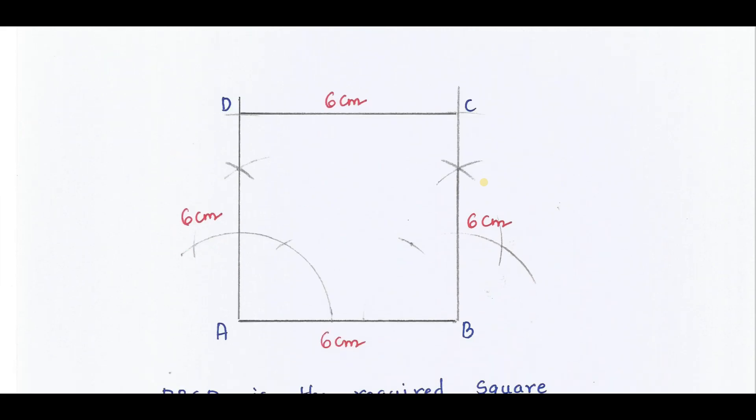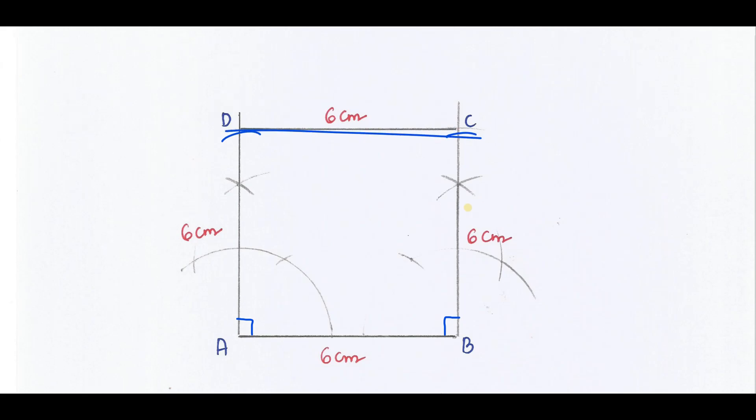Construct a square of side 6 cm. First draw a line segment of 6 cm. Then draw the perpendicular line, that is 90 degree. Then cut an arc of 6 cm on both sides. Then join this. You will get a square of sides 6 cm.